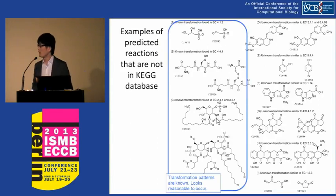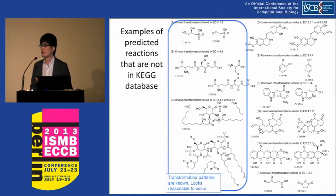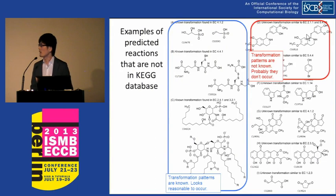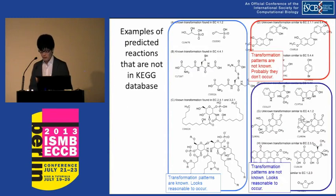The predicted pairs can be classified by whether or not their chemical transformation patterns are already known. Some pairs have transformation patterns already found in known enzymatic reactions — looking at these, we can say the reaction could reasonably happen. The remaining pairs don't have known transformation patterns, meaning some don't look likely to occur, but some are found to be likely to occur just by looking at the chemical structures, even without known transformation patterns.